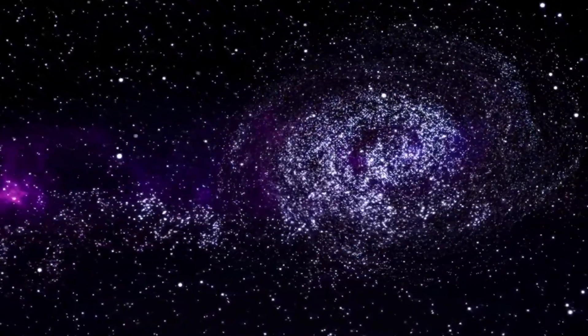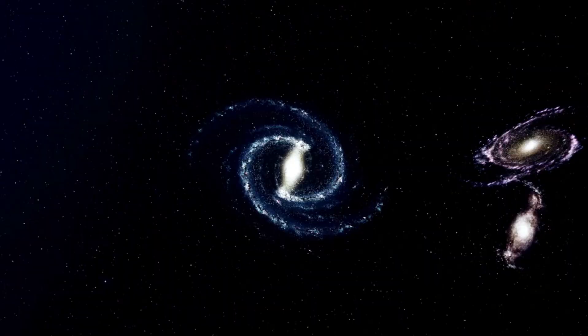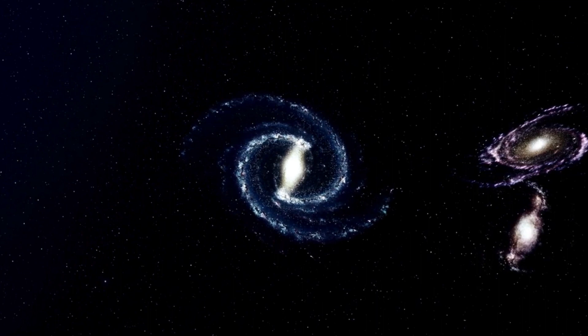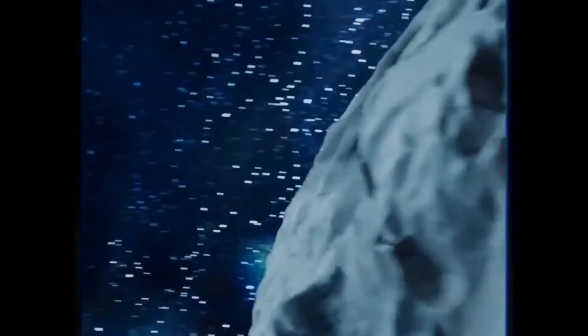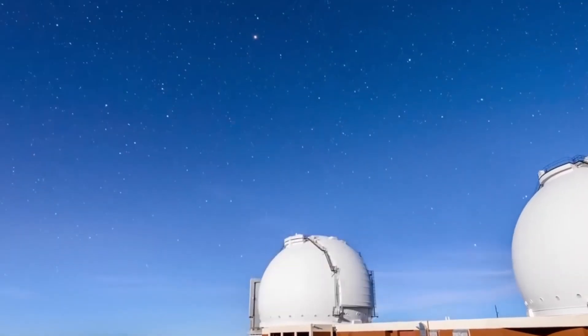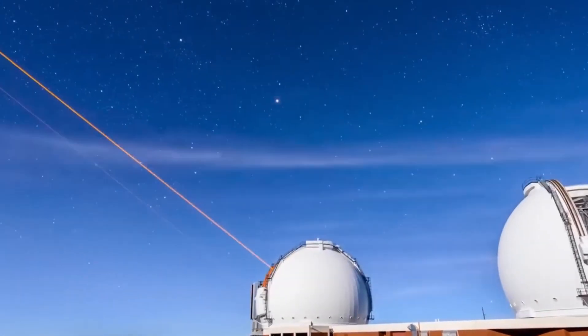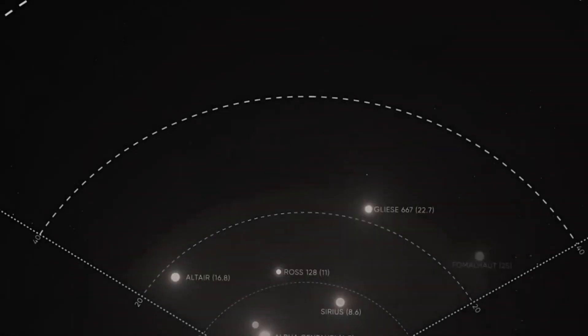The newly formed planet known as AB RGB orbits its host star at an incredible distance of 8.6 billion miles, which is more than two times farther than Pluto is from the Sun. It is most likely about nine times more massive than Jupiter. If ever it would take a very long time for the planet the size of Jupiter to develop at that distance. This leads scientists to the conclusion that this planet could not have formed at such a great distance without the disk instability.